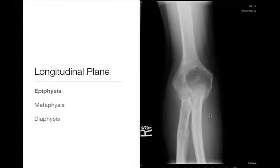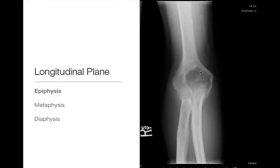Here we have an epiphyseal-based lesion that is also extending into the metaphysis — there can be overlap between locations. It is eccentrically located within the epiphysis and metaphysis, with a narrow zone of transition and non-sclerotic border. This was a chondroblastoma arising in the epiphysis of the distal humerus. Chondroblastomas are typical of epiphyseal-based lesions.